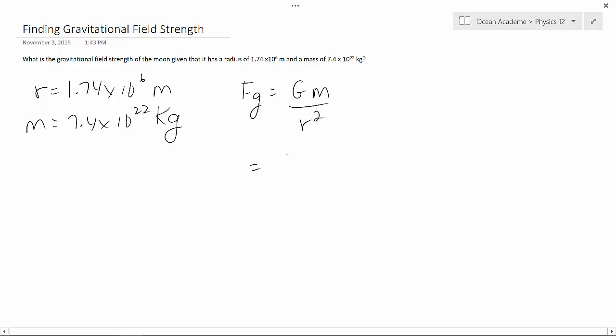So plugging in our numbers, g is our gravitational constant, that is 6.67 times 10 to the power minus 11, times our mass, which is 7.4 times 10 to the power 22,